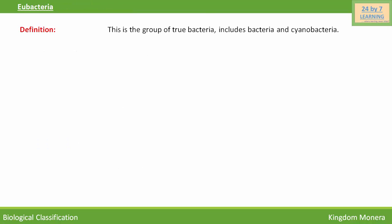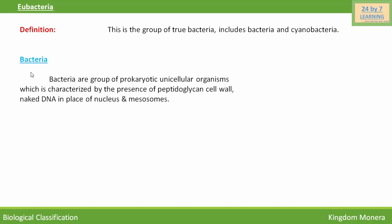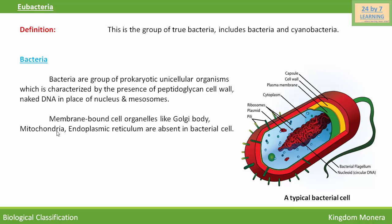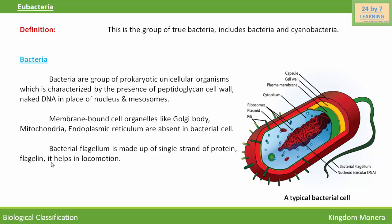Eubacteria is a group of true bacteria, including bacteria and cyanobacteria. Bacteria are a group of prokaryotic unicellular organisms characterized by the presence of a peptidoglycan cell wall, naked DNA in place of a nucleus, and mesosomes. Their cell wall is made up of peptidoglycan. Naked DNA is present in the place of a nucleus. There are 70S ribosomes found in their cytoplasm. Membrane-bound cell organelles like Golgi complex, mitochondria, and endoplasmic reticulum are absent in bacterial cells. Bacterial flagella are made up of a single strand of protein called flagellin, which helps in locomotion.